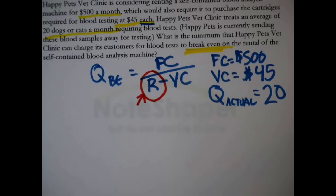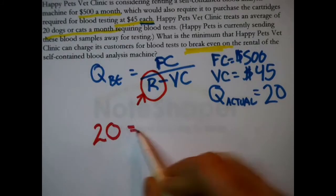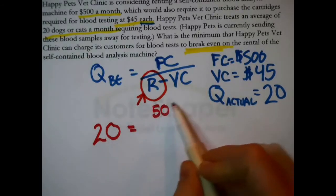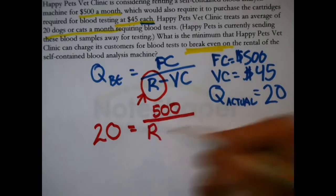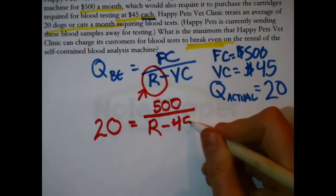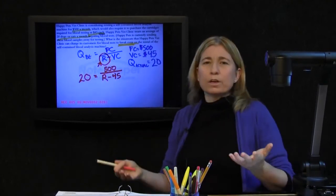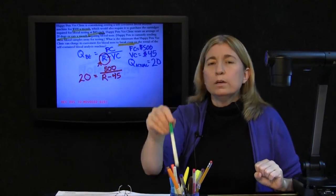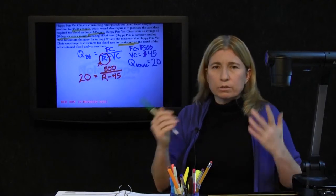We just fill in those numbers. Their actual quantity is 20. We'd like this to be true, which means that we reach that 20 would be the natural result of 500 divided by the revenue per unit, which is what we don't know, but we do know the variable cost, 45. We have one unknown. Now we have the means of figuring out what that revenue per unit would have to be, what they would have to charge per blood test or analysis.